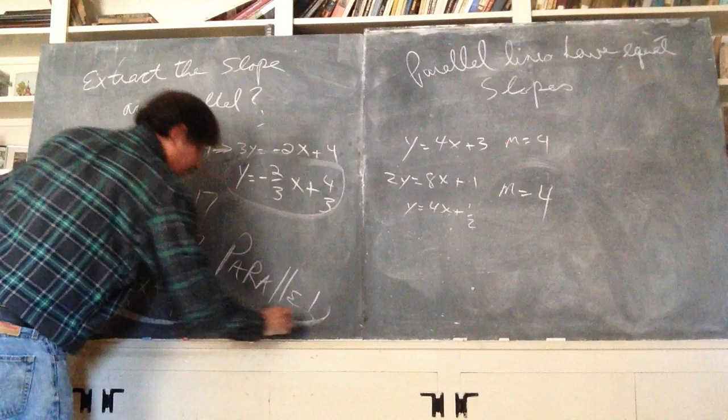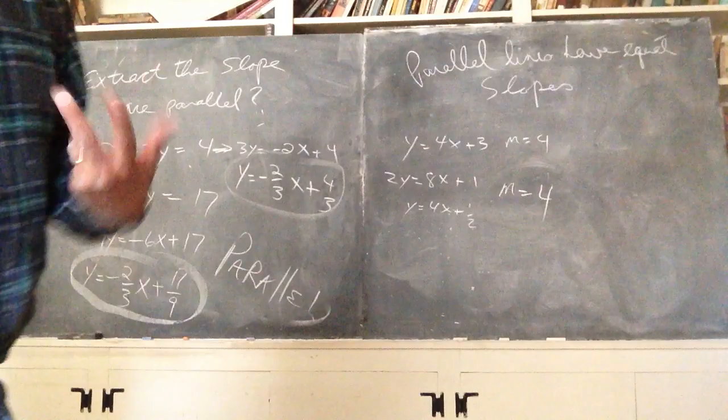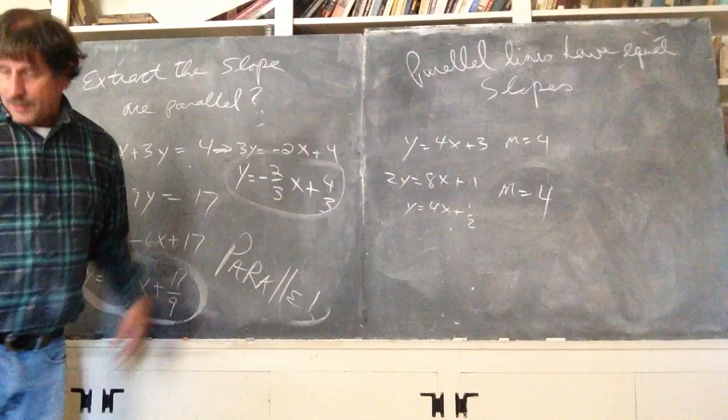Parallel. Because the slopes are the same. So, all you have to do is extract the slope. You put it in slope intercept form. That's how you extract the slope. Just get it, just solve for y and the slope just pops out at you. And if they're the same, they're parallel.